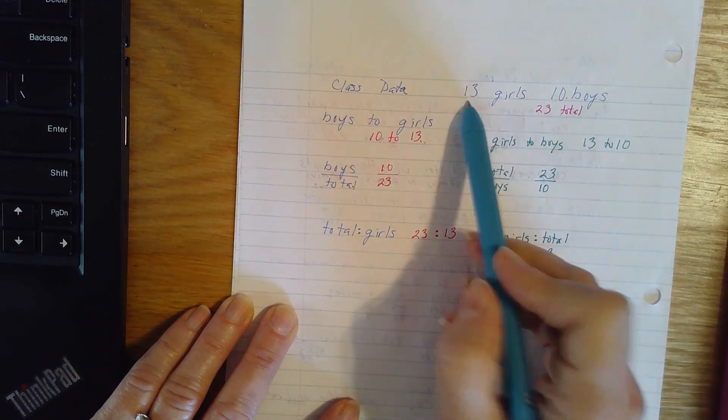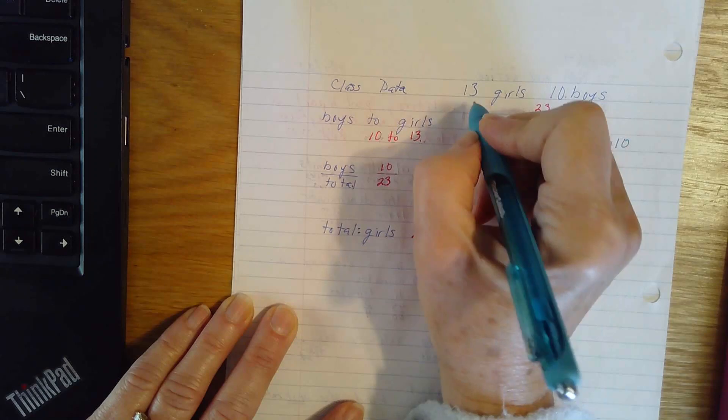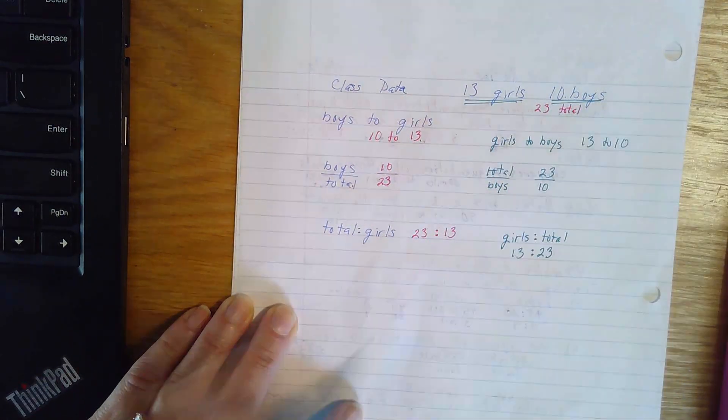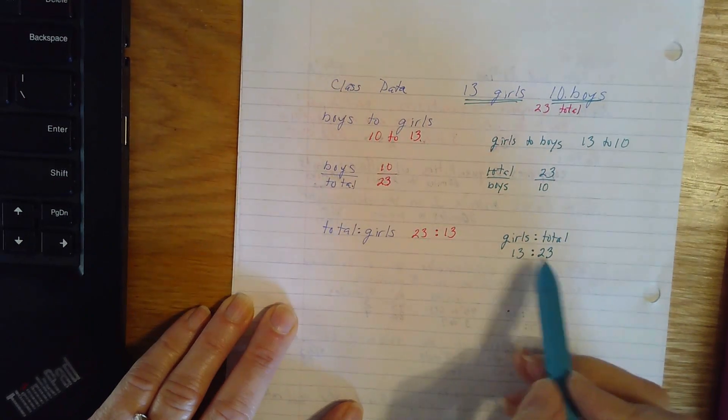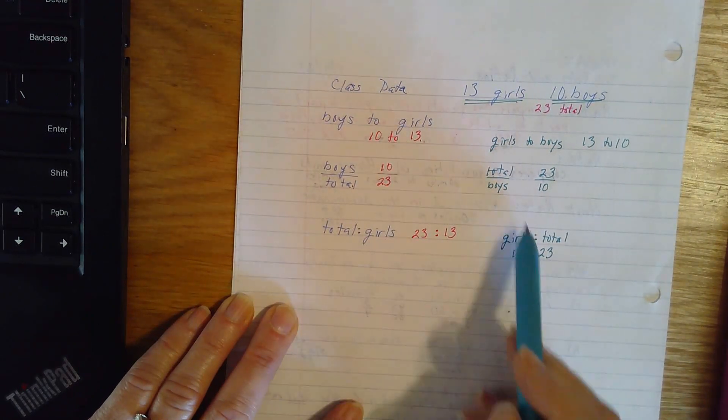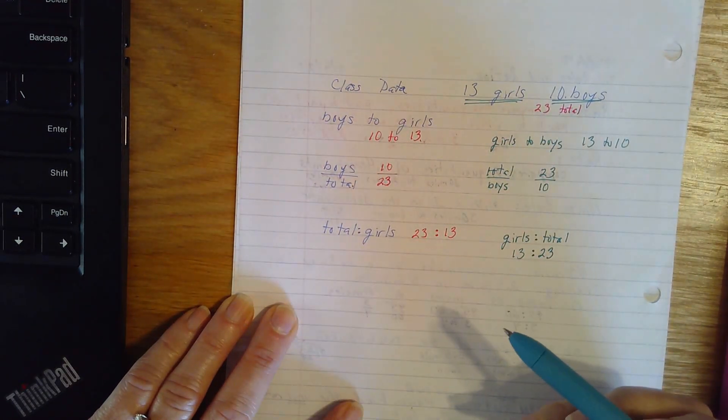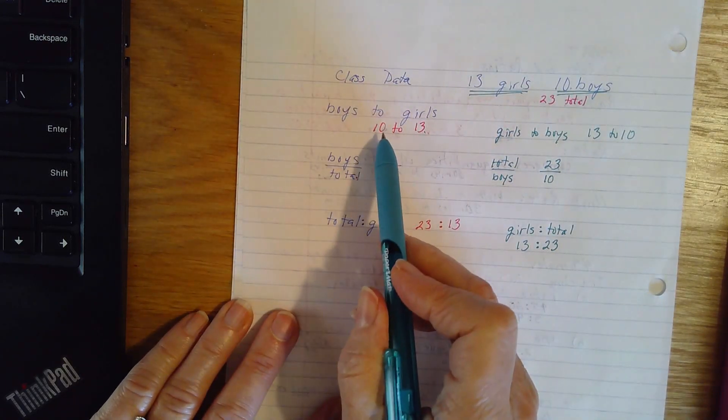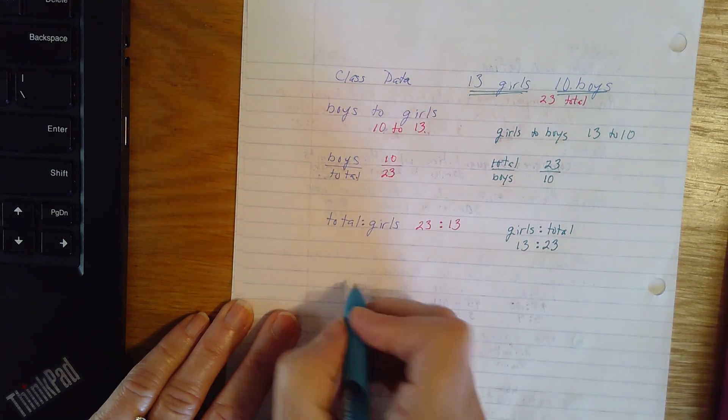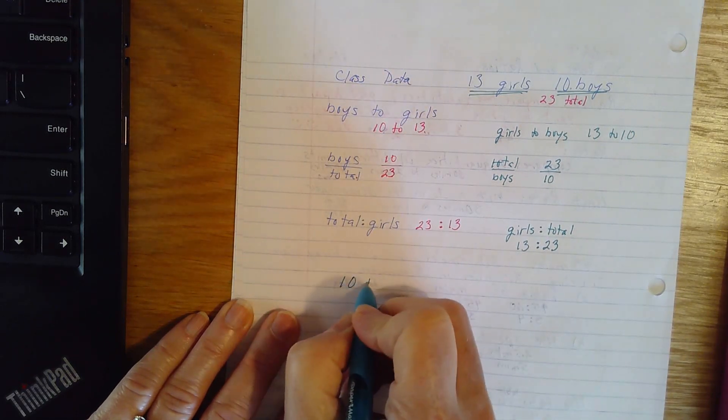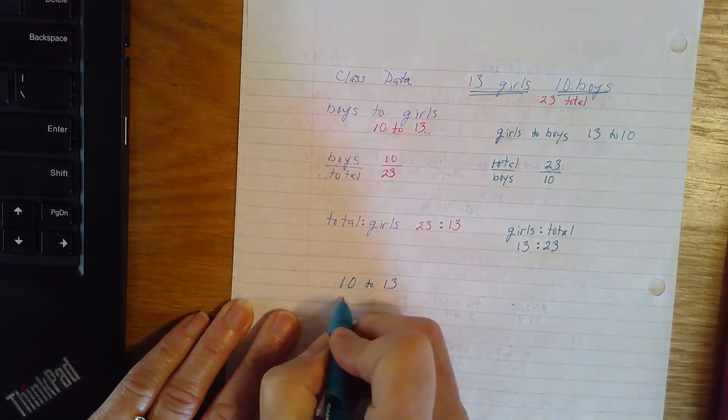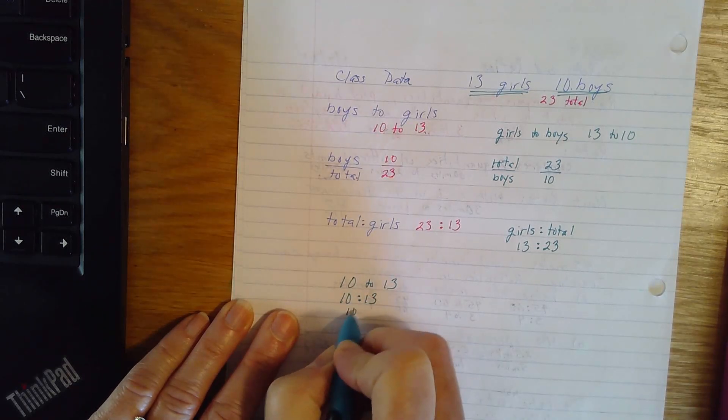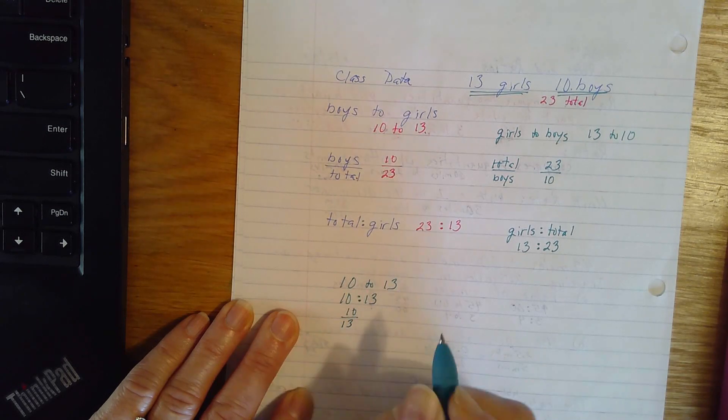So from two pieces of information in our class, we've got 13 girls and 10 boys present this day. I can write a total of six different ratios. This ratio, any one of these ratios could have been written three different ways. So it could have been written as 10 to 13, 10 to 13, or 10 to 13.